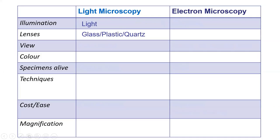For lenses in light microscopy: the cheap ones use plastic, the mid-range use glass, and the more expensive ones use quartz. Generally, more expensive means better resolution from your microscope. For viewing, you're often using your eyeball, although cameras are common nowadays in the digital era.